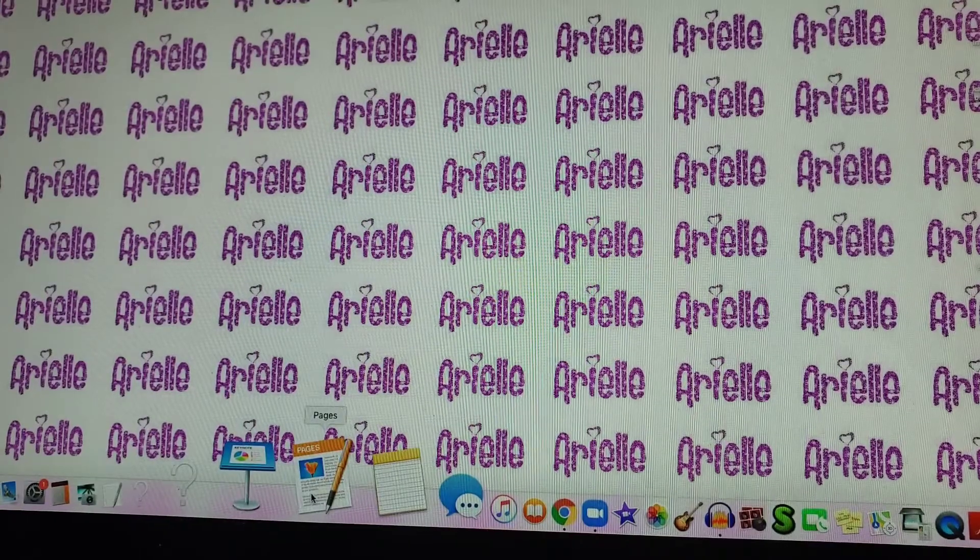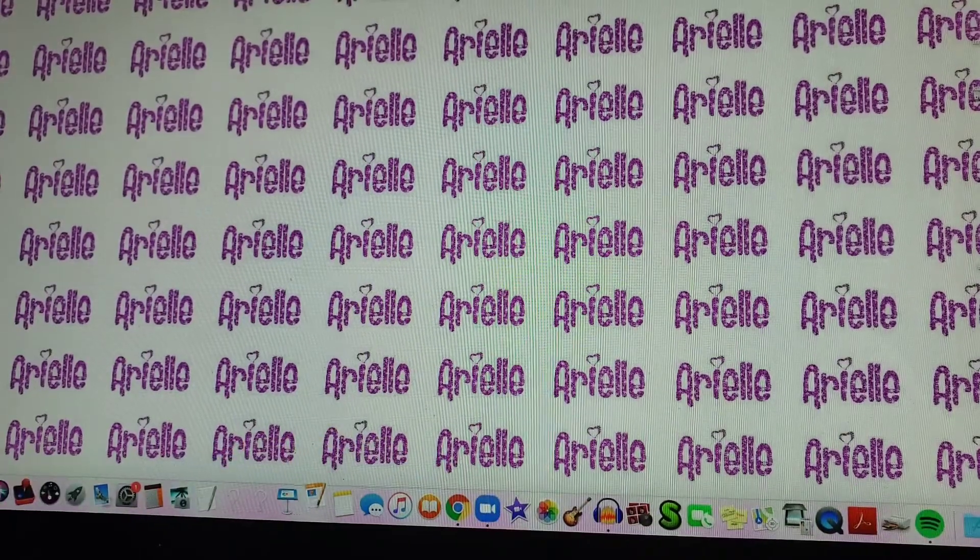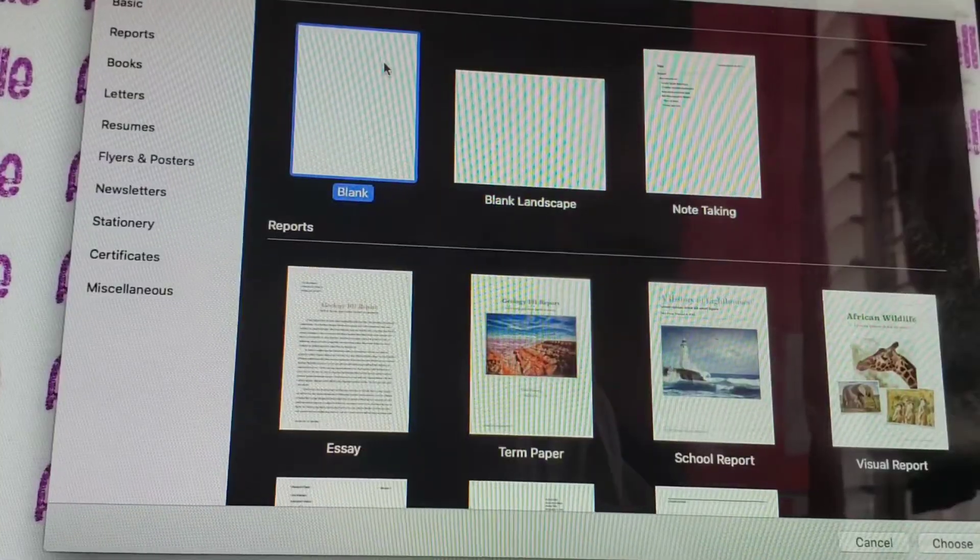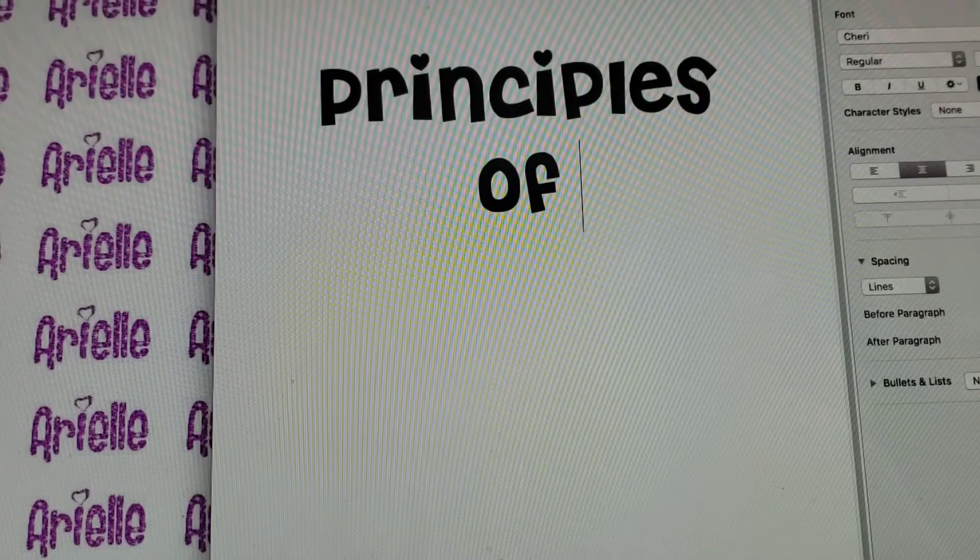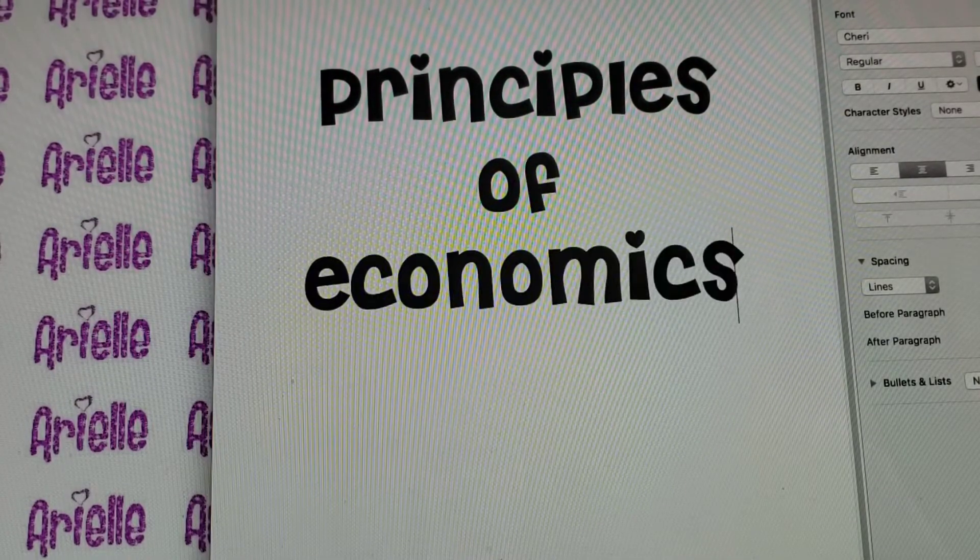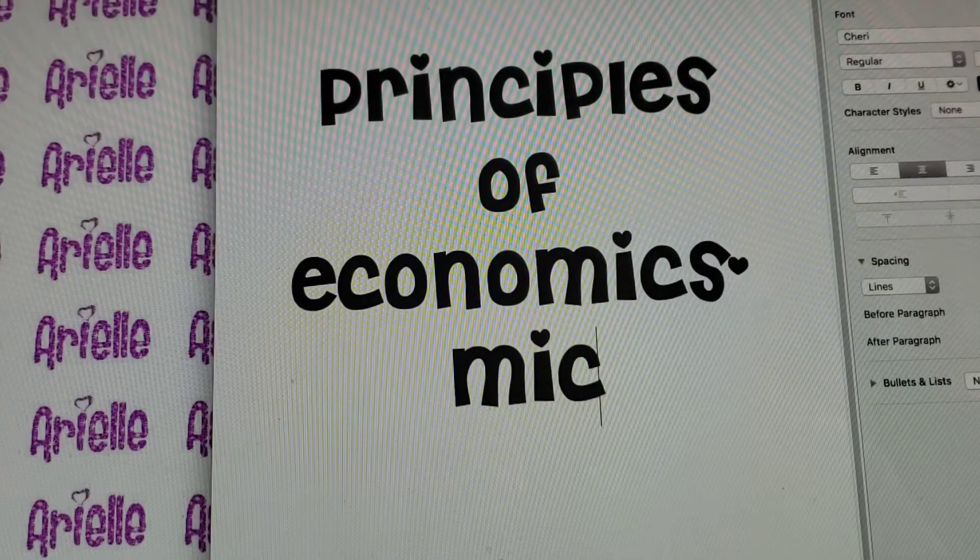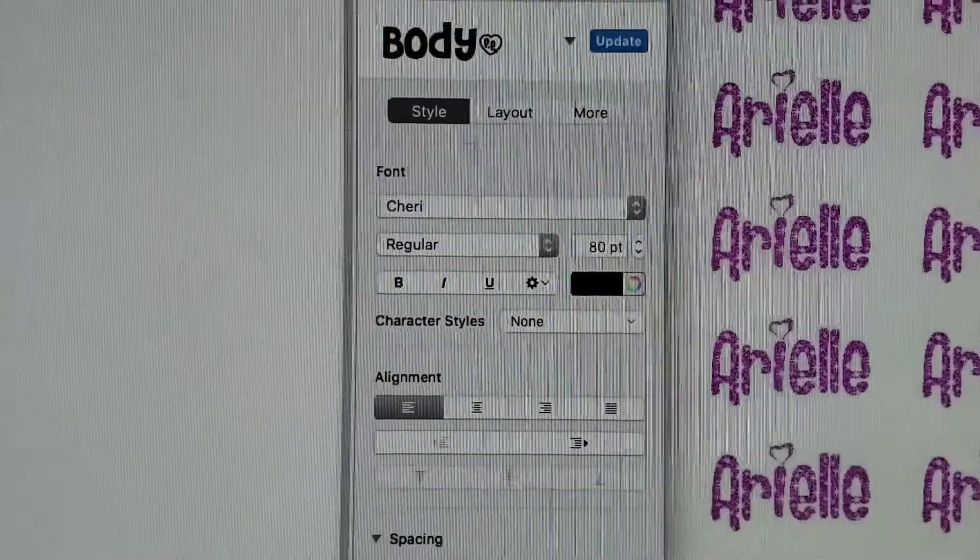The first thing I need to do is go to Pages, and then I'll select Blank, and then I would select my font choice. For the titles of my subjects, I would type out the name, and then I'll select the font size.